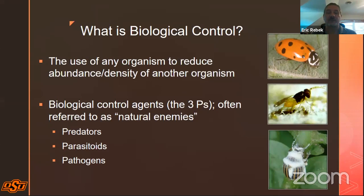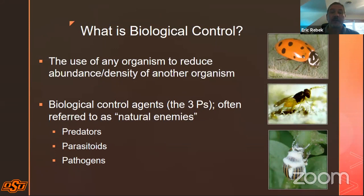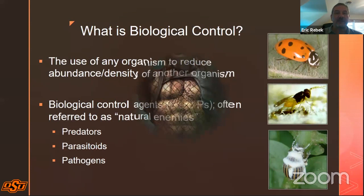When we think of agents that can be used for biological control, I like to refer to them as the three P's of biological control. These are often referred to as natural enemies — a term I'll use throughout the presentation. Those three P's are predators, parasitoids (I'll describe what that means in a moment), and pathogens. Yes, insects can get sick just like people, and there are some pathogens we can use as biological control agents.